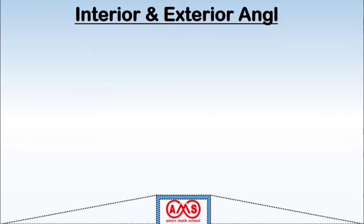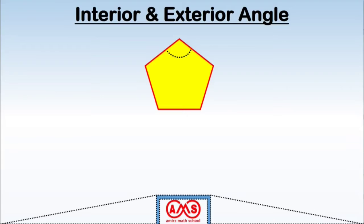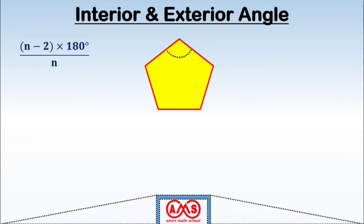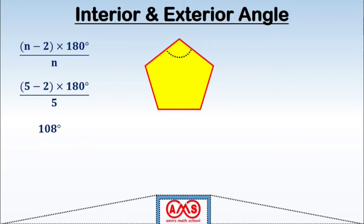Now let's see the interior and exterior angles of a pentagon. We consider this pentagon as a regular pentagon. For an n-sided regular polygon, the value of each interior angle is (n minus 2) times 180 divided by n, where n is the number of sides. Since the pentagon has five sides, n equals 5, so 5 minus 2 times 180 divided by 5 equals 108 degrees. So the value of each interior angle of a regular pentagon is 108 degrees.